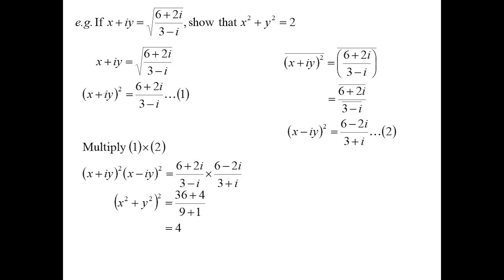So the left-hand side will become x squared plus y squared all squared. The right-hand side will become the difference of two squares, but because we're playing with complex numbers, it becomes the sum of two squares. We'll get 36 plus 4 and 9 plus 1. So x squared plus y squared squared is 4. Therefore, x squared plus y squared must be 2, and it has to be positive 2, because x and y are real numbers and we square them. They've got to be positive numbers.